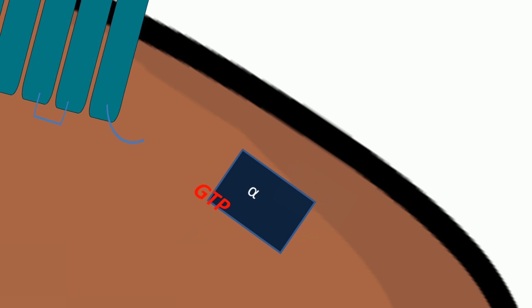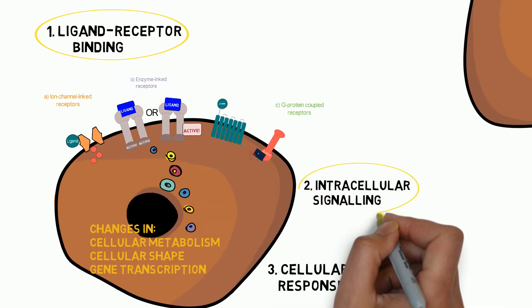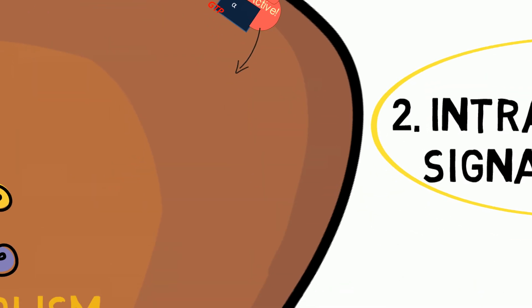After the ligand receptor complex is formed, small intracellular signaling molecules called second messengers are produced in large numbers. Examples include cyclic AMP, calcium ions, and diacylglycerol.